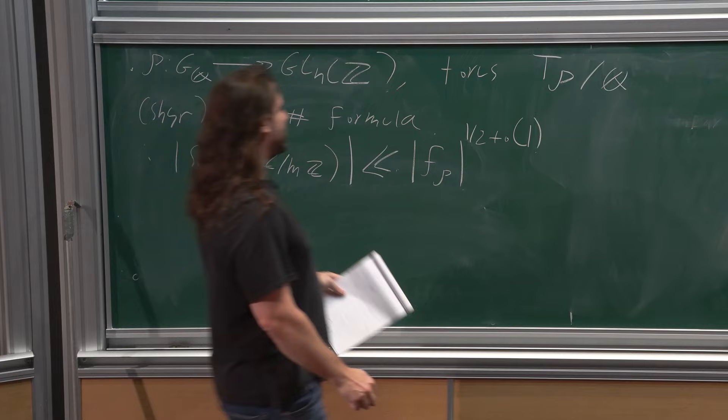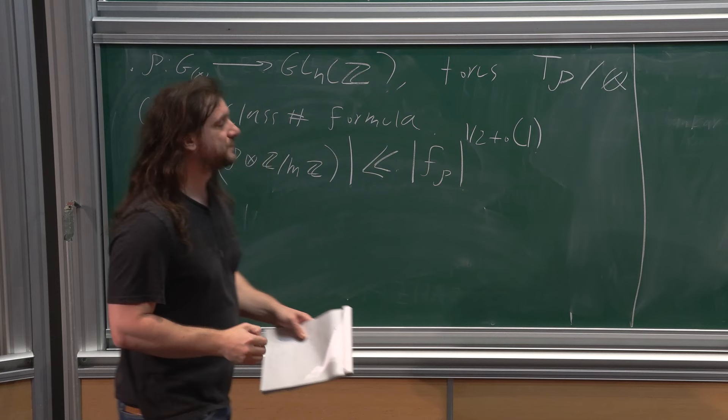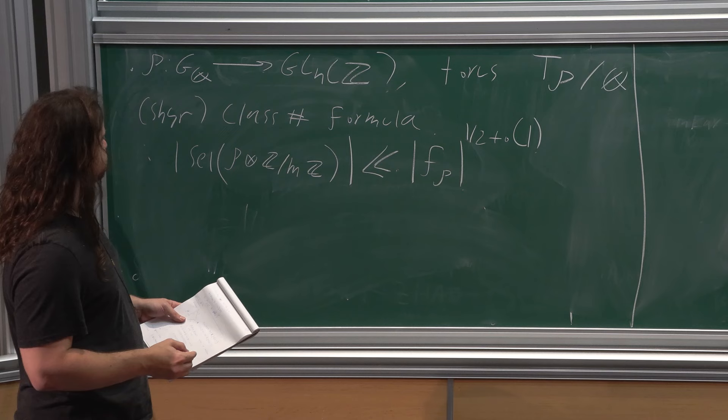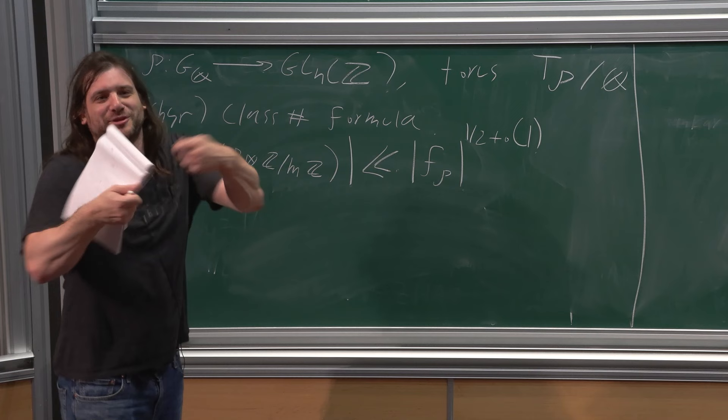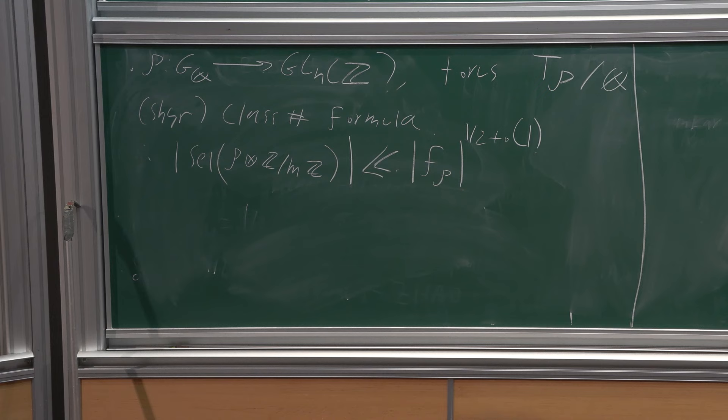The problem is that for CM abelian varieties, the corresponding Selmer groups you'd need to study are built out of CM types and combinatorics that are extremely messy. So this is a project that's in theory doable, but in practice very hard. What's given to you is the finite Galois module—if you have the finite module, you have it potentially as the residual representation, and then you want to embed it into something larger.